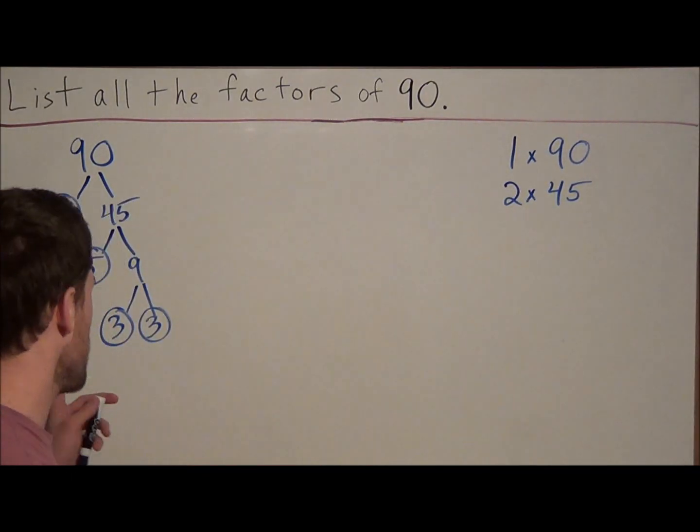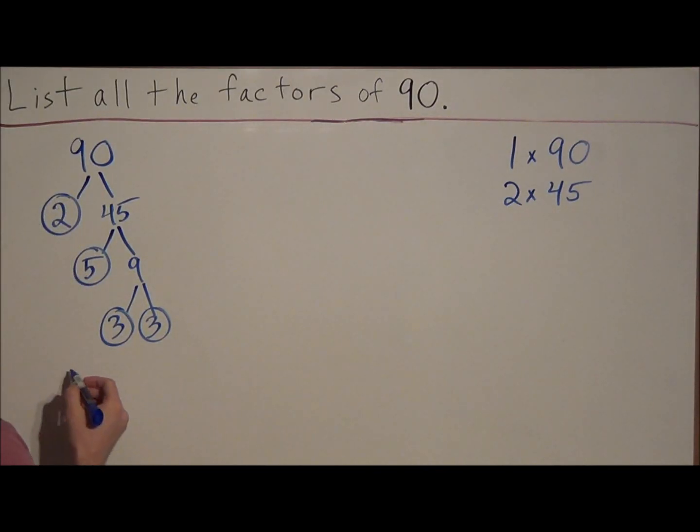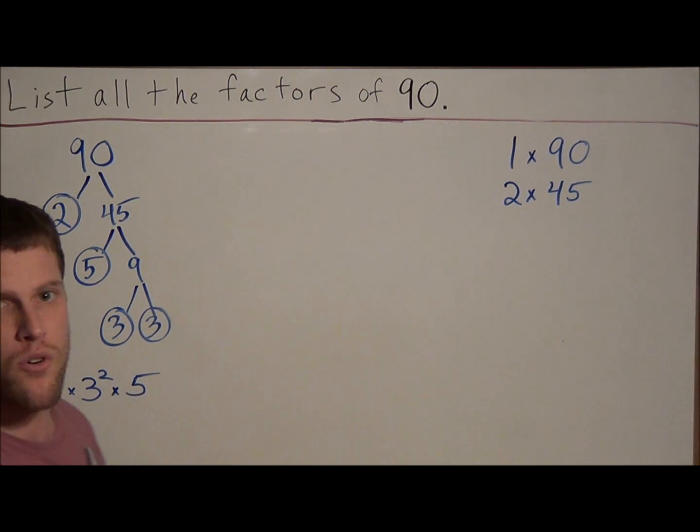So if we want to write this out in exponential form, we've got 2 times, and then we have 2 factors of 3. So we have 3 to the second power, because 3 times 3 is 3 squared, and then we have times 5. You always want to write it in order of least to greatest, since 2 is the smallest, then 3, then 5, that's the order we're going to write it in.